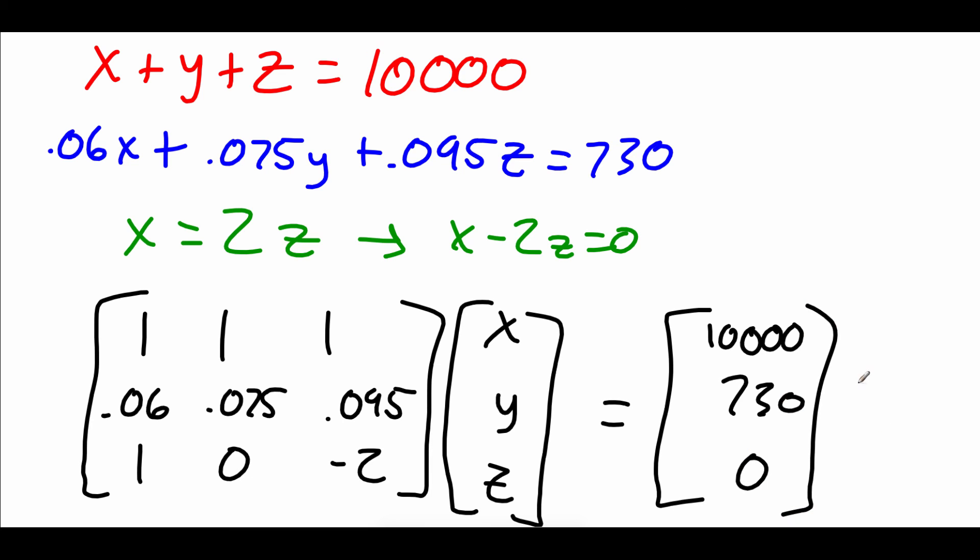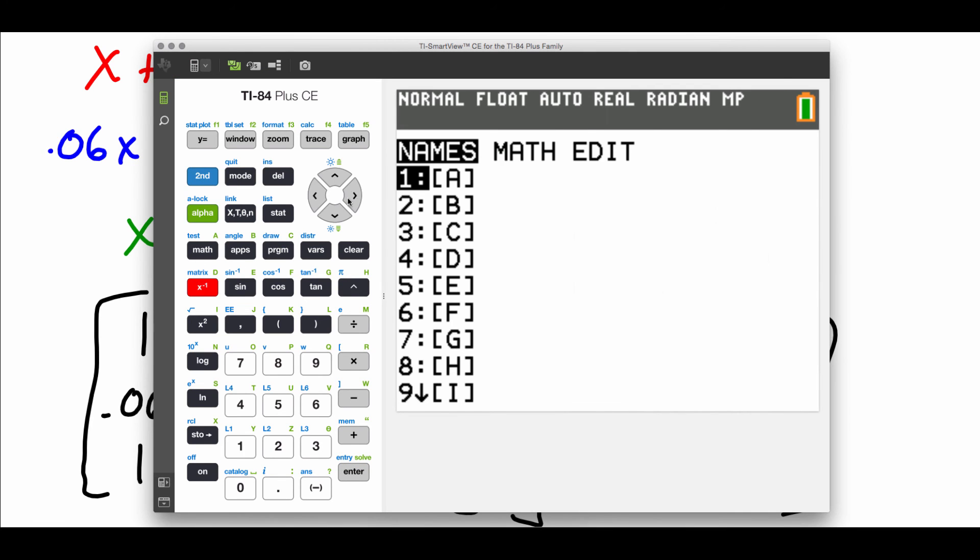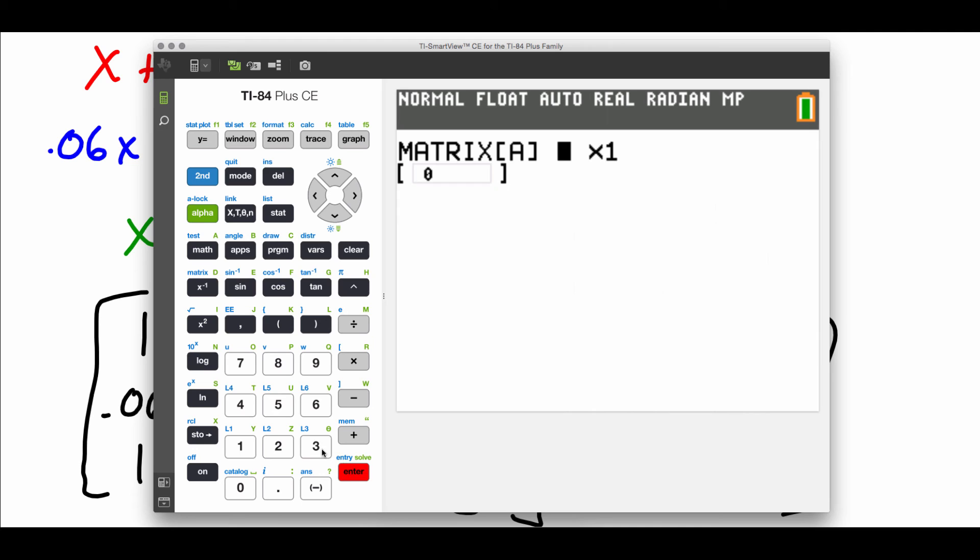So now from here I'm going to use my calculator to do the inverse matrix stuff. So if we go second matrix, let's edit matrix A. This one is 3 by 3. Across the top row we've got 1, 1, 1, and then we've got 0.06, 0.075, and 0.095. Bottom row is 1, 0, negative 2.